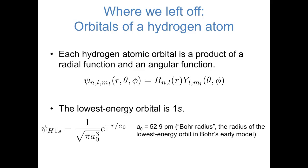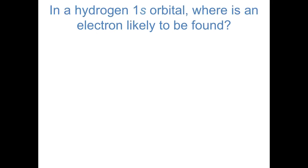The lowest energy orbital of a hydrogen atom — the orbital where the electron is in a ground-state hydrogen atom — is the 1s orbital, the orbital for which n equals 1 and l equals 0. A hydrogen 1s orbital has the mathematical form of a normalization constant times a decaying exponential, e to the negative r over a-naught, where a-naught is the Bohr radius — the radius of the lowest energy orbit in the Bohr model. I'd like to spend much of this video thinking about where an electron in a hydrogen 1s orbital is most likely to be found.